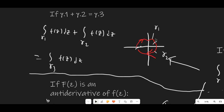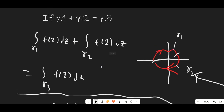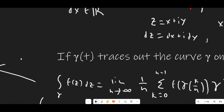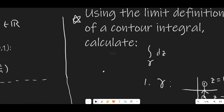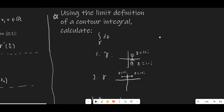If we add these curves together, we make a third curve γ3 that starts from this point, goes all the way around, and ends right here. The integral of f(z) dz over γ1 plus the integral of f(z) dz over γ2 equals the integral of f(z) dz over γ3, which is pretty straightforward — just think about how the integral from a to b of f(x) plus the integral from b to c of f(x) equals the integral from a to c. So I have some practice problems using the limit definition — there will be a lot of practice problems throughout this series just to check your understanding.